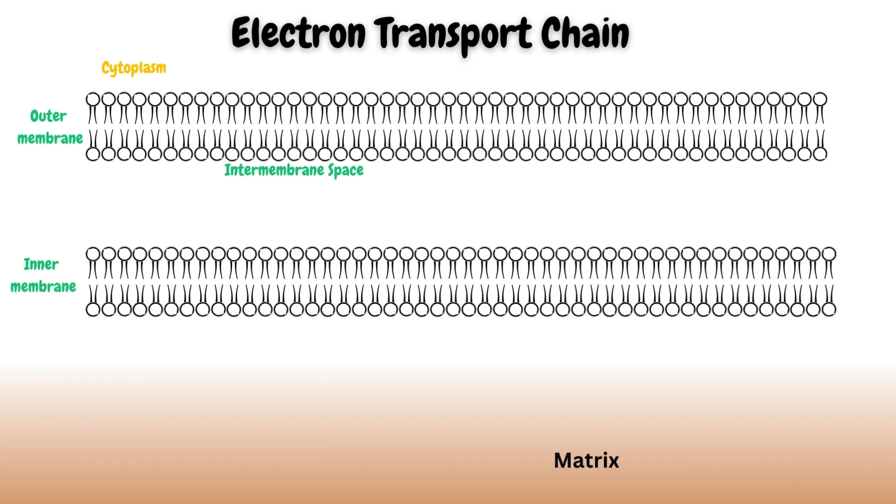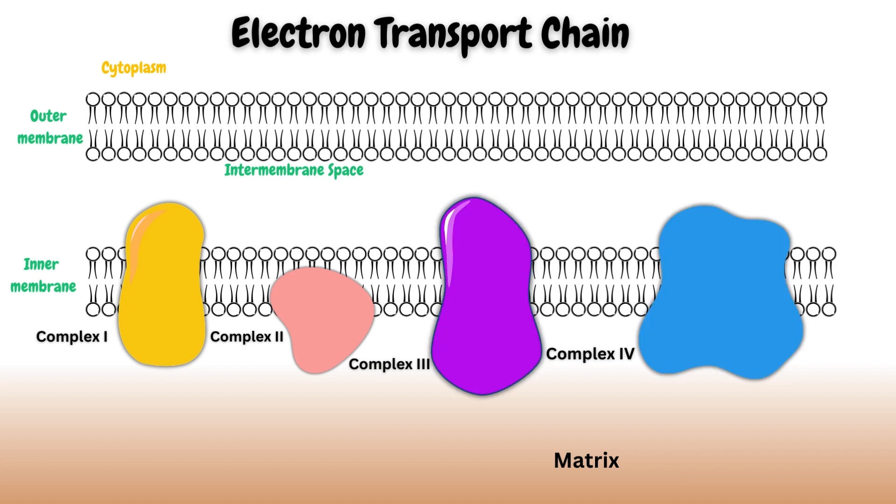Electron transport chain involves a series of electron carriers and protein complexes. The four major complexes are complex 1, complex 2, complex 3, and complex 4. There are also two small electron carriers known as ubiquinone and cytochrome C that are important for the process.